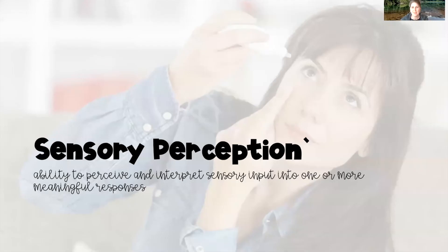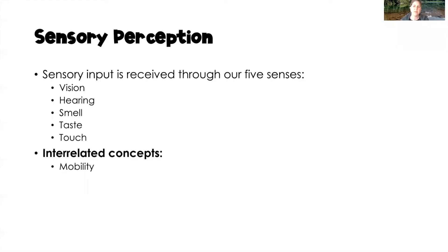Today we are going to be discussing sensory perception. Sensory perception is the ability to perceive and interpret sensory input, and that sensory input is going to come from one of our five senses. We're supposed to be able to take that sensory input and translate it into one or more meaningful responses. Sensory input comes through vision, hearing, smell, taste, or touch. The interrelated concept is mobility, which we have already covered on this channel — linked in the description box below.